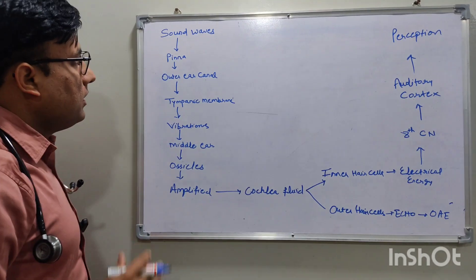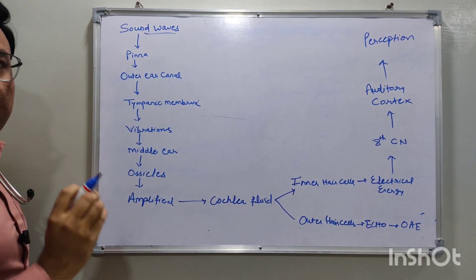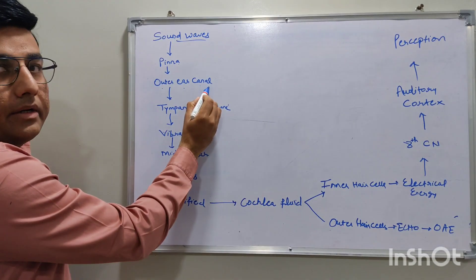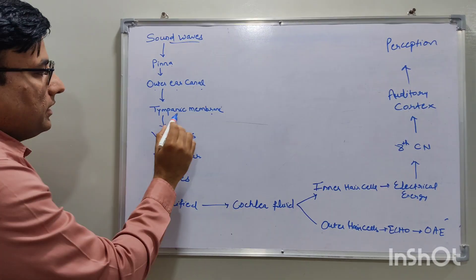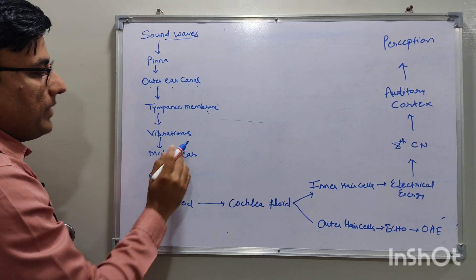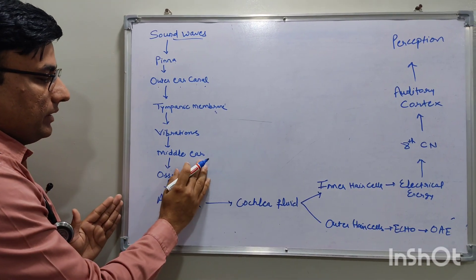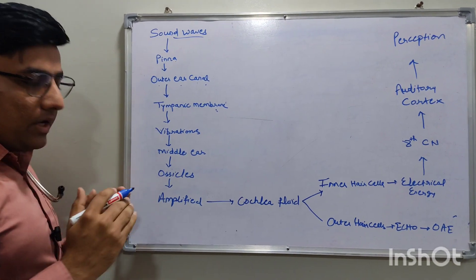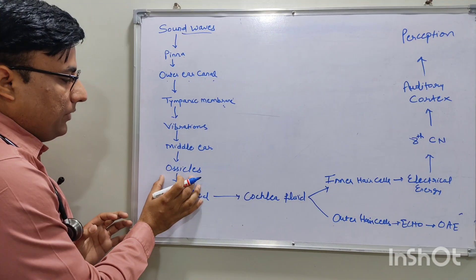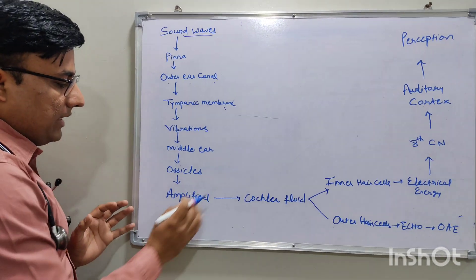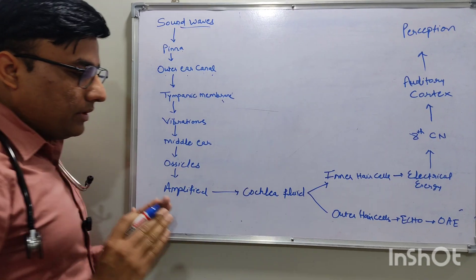Coming to the normal hearing process: sound waves are collected by the pinna and enter the outer ear canal, then transfer to the tympanic membrane. Sound waves hit the tympanic membrane and vibrations are generated. These vibrations are transferred to the middle ear and amplified by the ossicles.